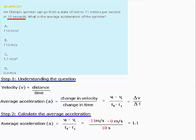Now, we have to take care of the units. We've got meters per second in the numerator and seconds in the denominator. So what we have here is 1.1 meters per second over second. Another way of writing this is 1.1 meters per second squared.